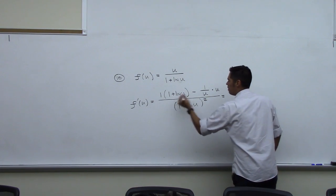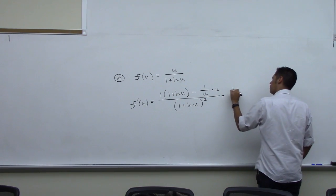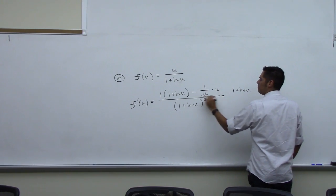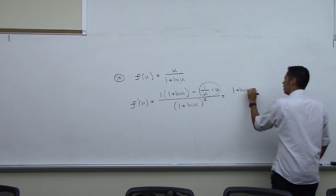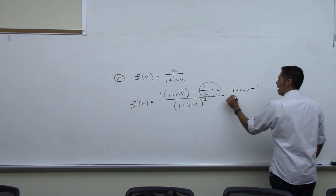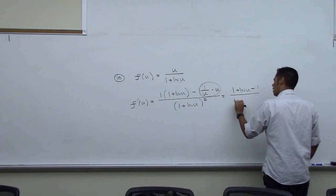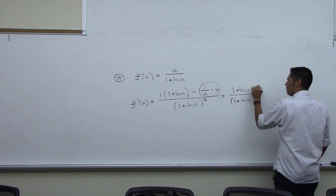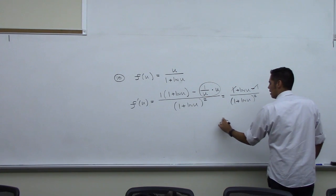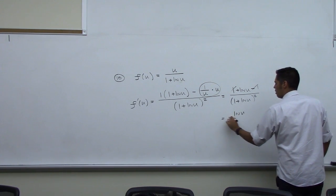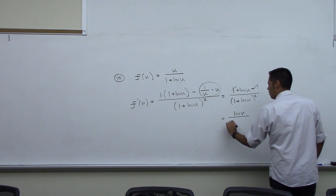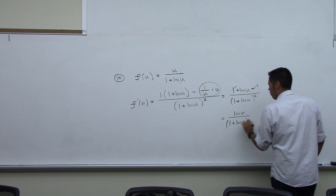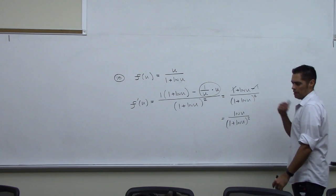Now this just becomes 1 plus natural log of u. Then this is going to become right here — that's a 1, so minus 1. And then over 1 plus natural log of u squared. The 1's cancel and you have natural log of u over 1 plus the natural log of u, that quantity squared. There it is.